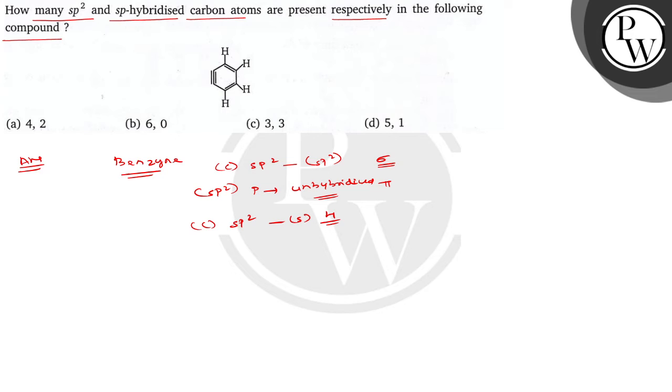Now let's discuss the triple bond. In C triple bond C, suppose in this example, the single bond is a sigma bond formed between the overlapping of sp and sp orbitals of both carbons.